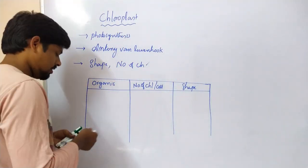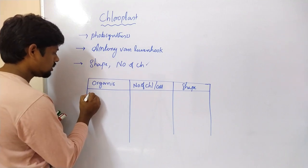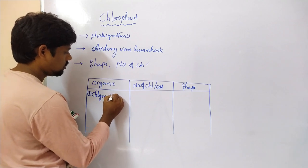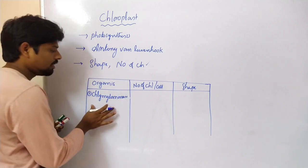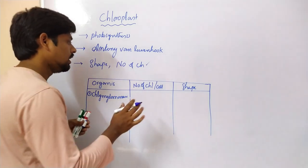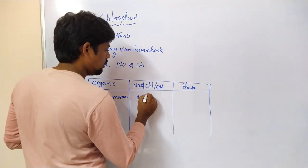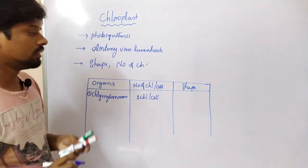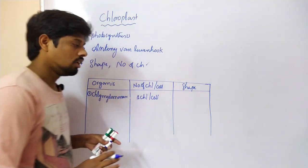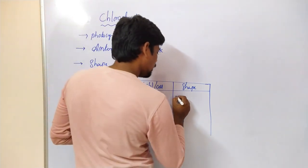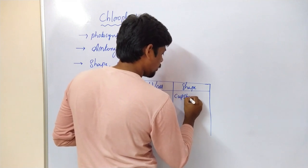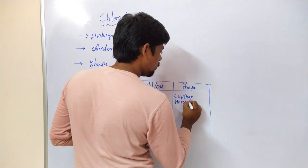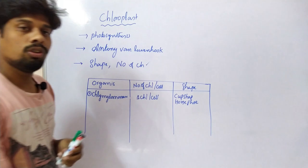Let us start with Chlamydomonas. Chlamydomonas is an organism that contains one chloroplast per cell. Coming to the shape, the shape here is cup shape, and also star shape.